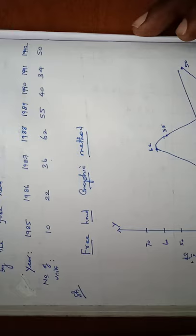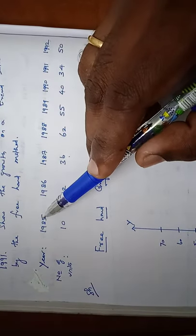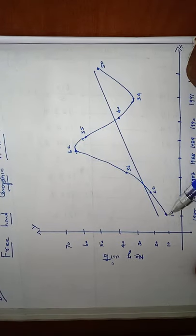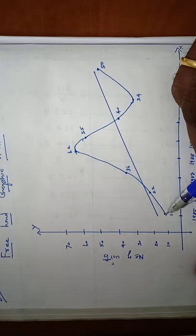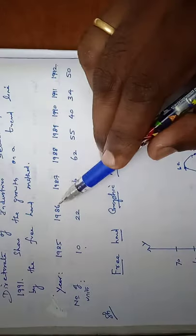First, we have to see the data. In the year 1985, number of units 10. So in the year of 1985, number of units can be taken as 10. Again, the year of 1986, 22.